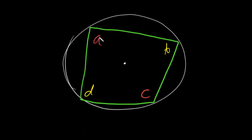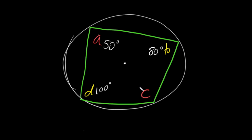In other words, angle A plus angle C are supplementary, meaning they add up to 180 degrees. Same with B and D. So if angle B happened to be 80 degrees, then angle D would have to measure 100 degrees. If angle A was 50 degrees, then angle C would have to measure 180 minus 50, which would be 130 degrees.